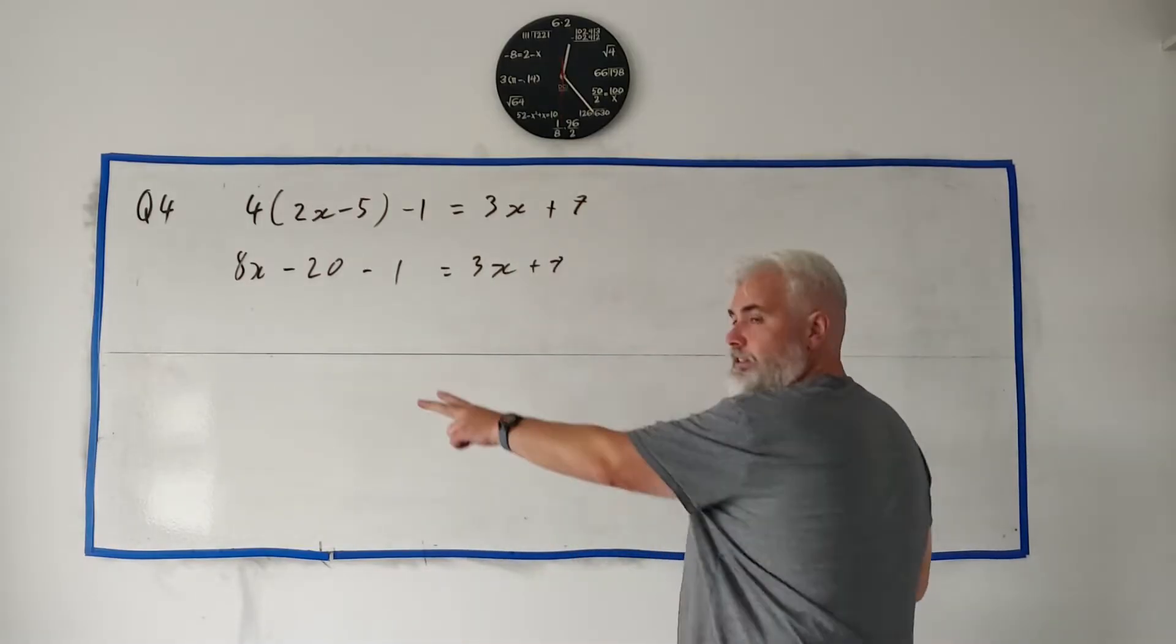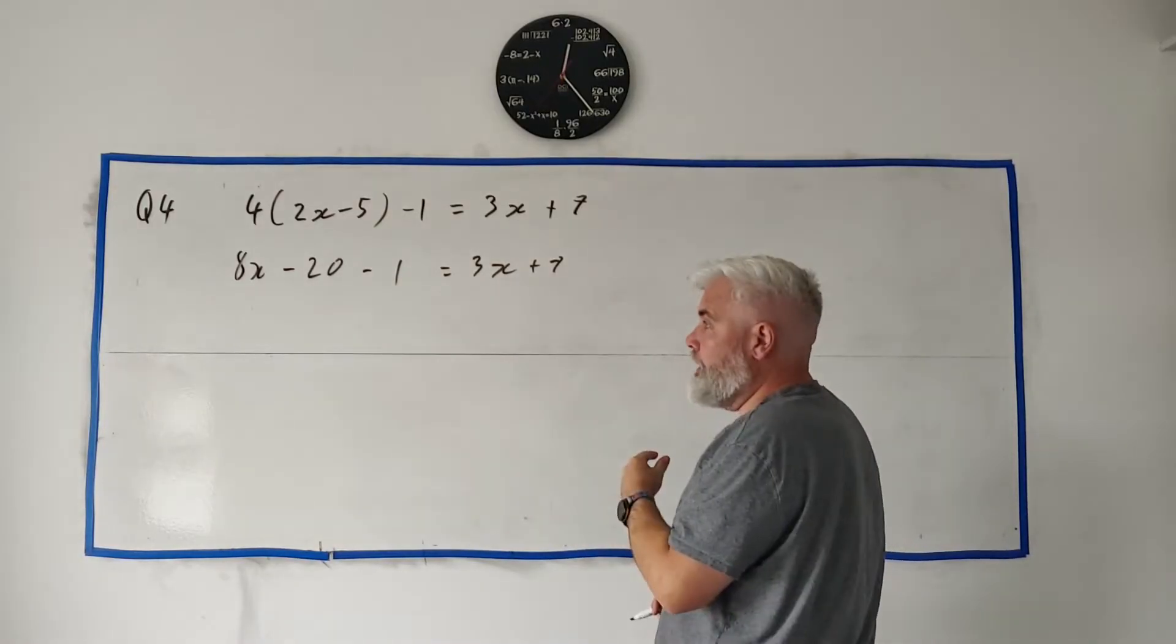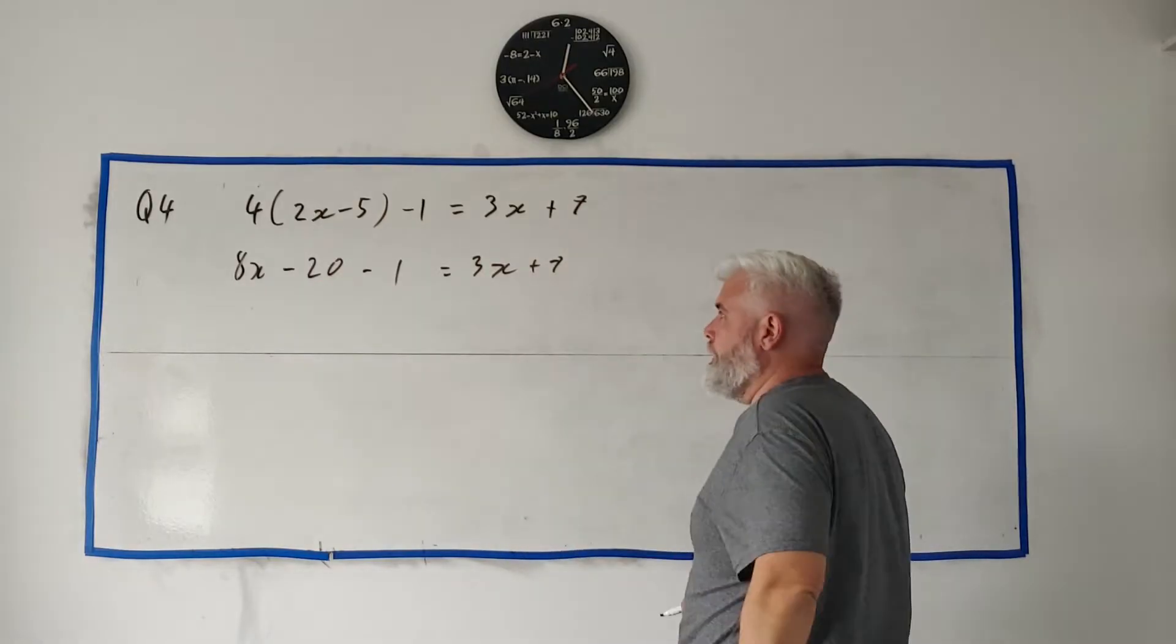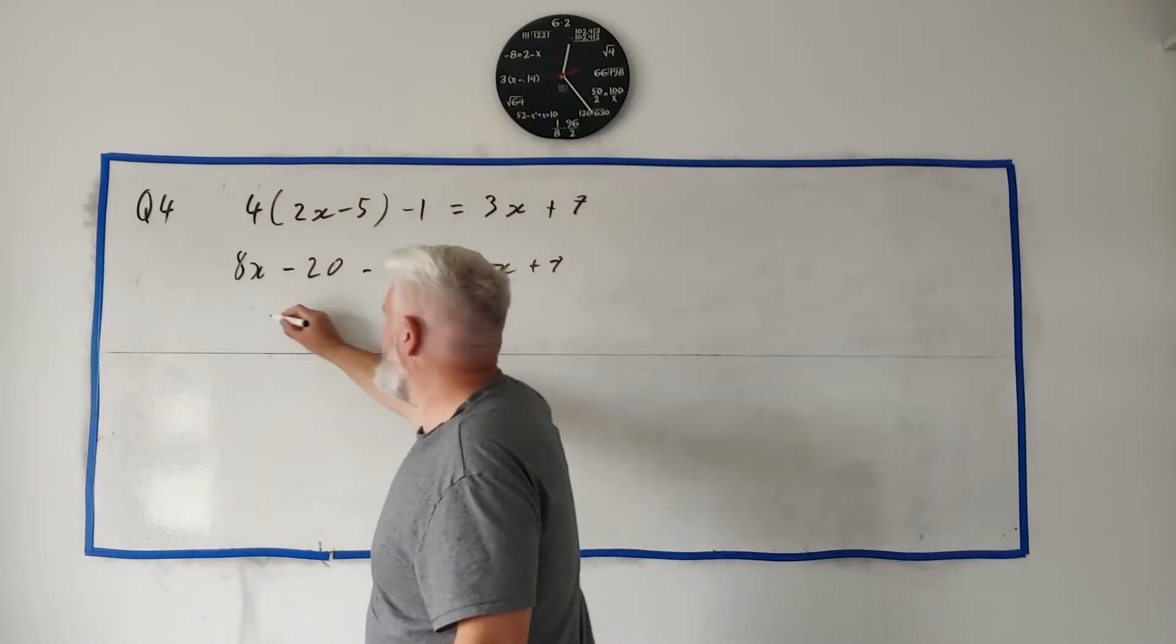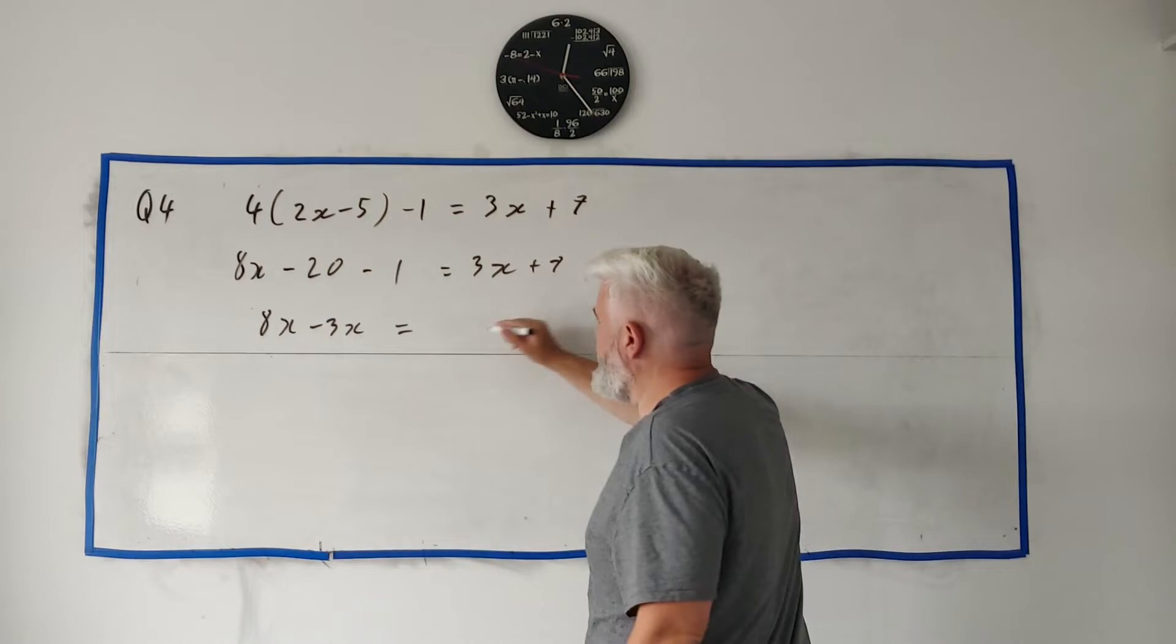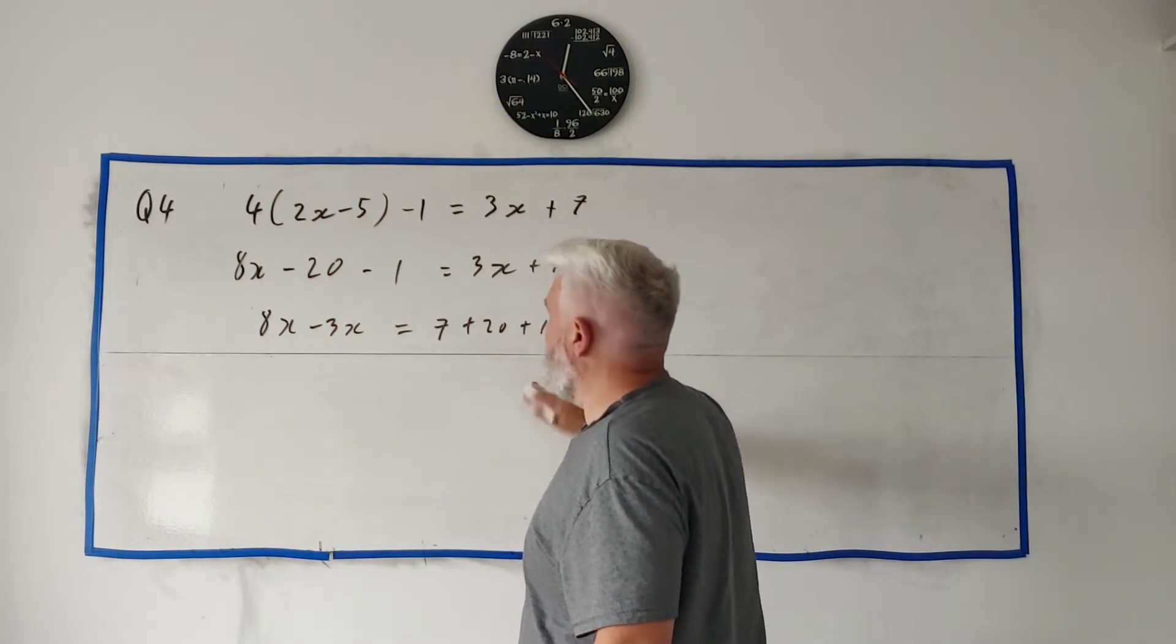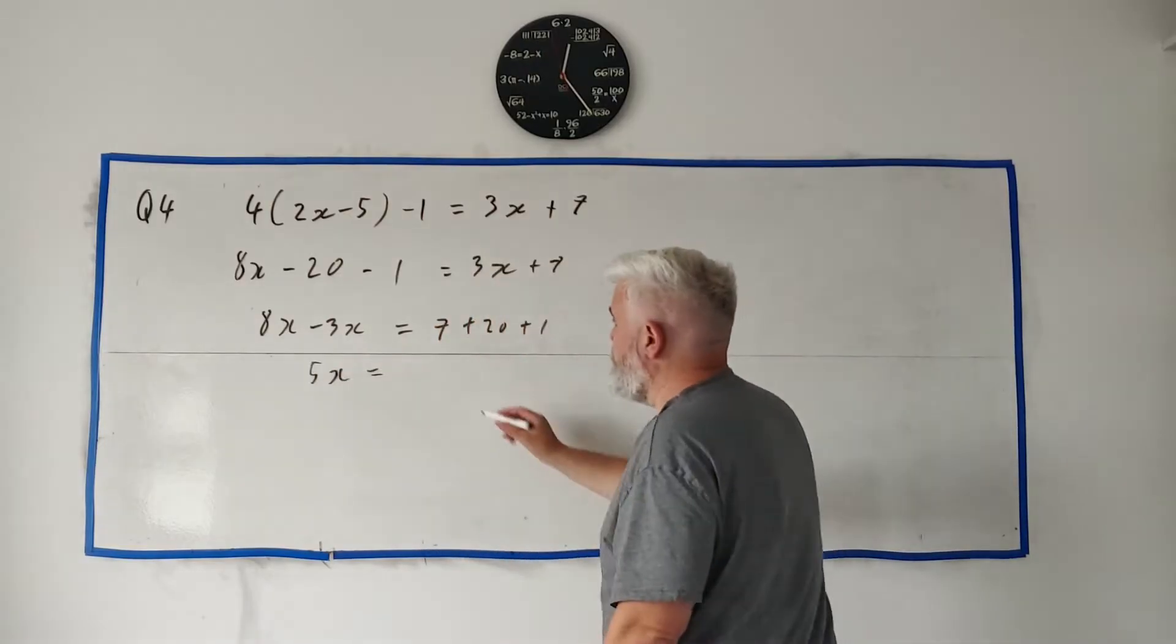Now let's get all the x's to one side, that means taking 3x from both sides, and all the numbers to the right. That means adding 20 and adding 1 to everywhere. So on the left side we get 8x minus 3x, on the right side we get 7 plus 20 plus 1.